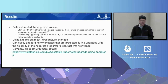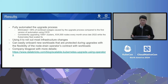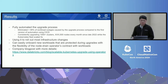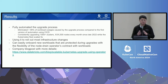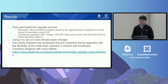Here are the results. We fully automated the upgrade process at Databricks. We eliminated more than 99% of workload outages caused by the upgrade process compared to the first version with Spinnaker and Jenkins. We almost never get paged for these kinds of issues. We've been consistently upgrading more than a thousand clusters and hundreds of thousands of nodes every month since late 2022 — when we launched the system — while the Kubernetes fleet scaled 5x. We use it to roll out most infrastructure changes at Databricks. It can easily onboard new workloads that need protection during upgrades, thanks to the node drain operator's multiple interface options.